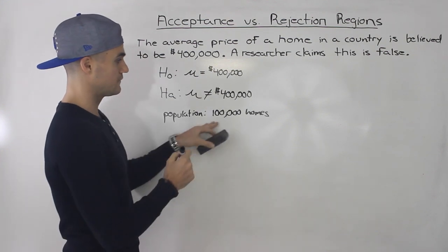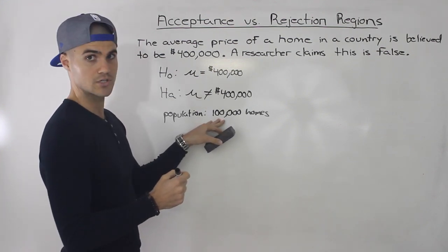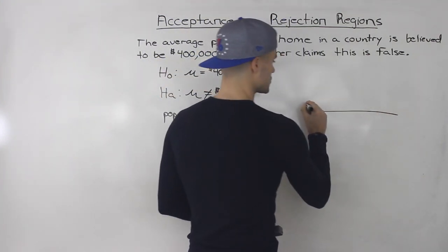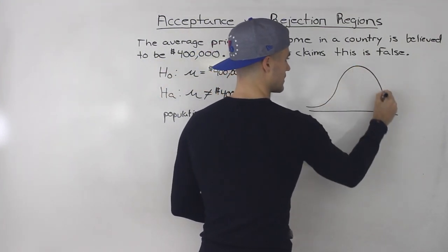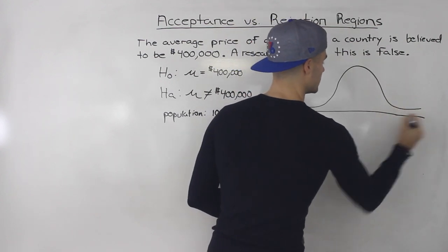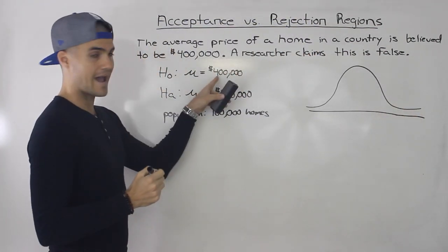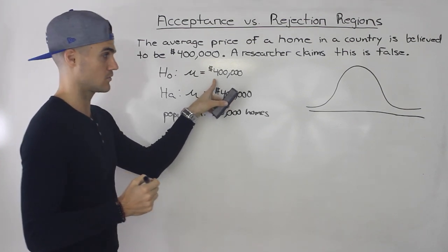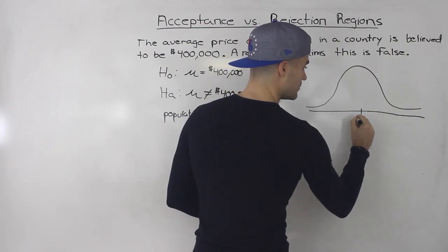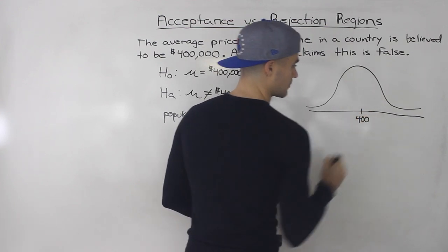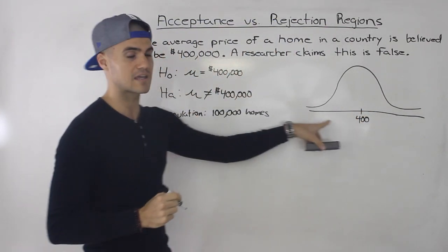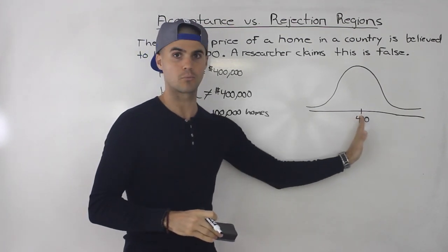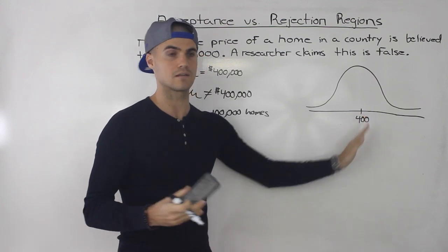If there are 100,000 homes in the population, by the central limit theorem the homes should start taking a normal distribution. And if the average price of a home is in fact $400,000 — the null hypothesis — then that would be in the middle of the distribution. Because the average in a normal distribution is always in the middle, I'll put 400 there, meaning $400,000.